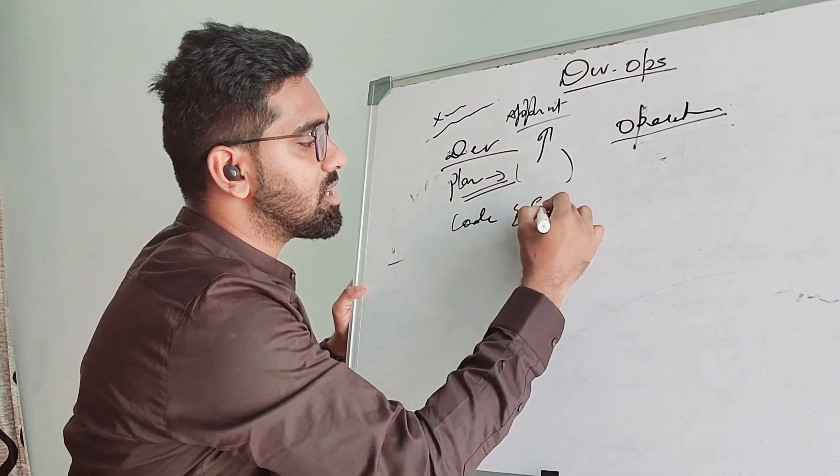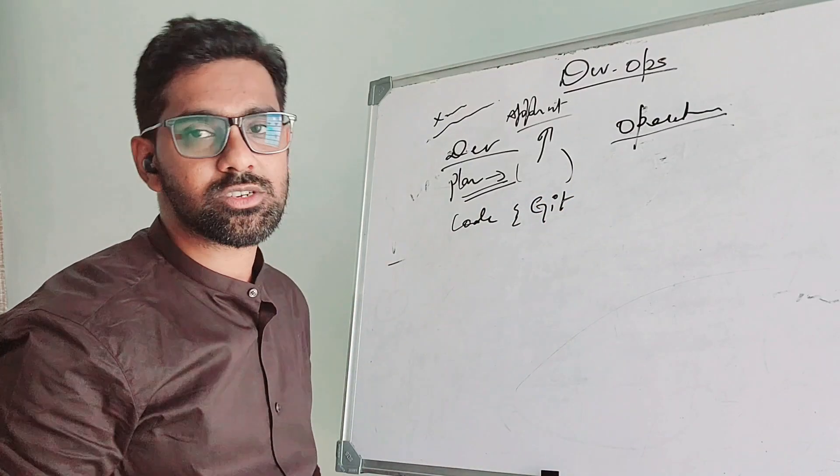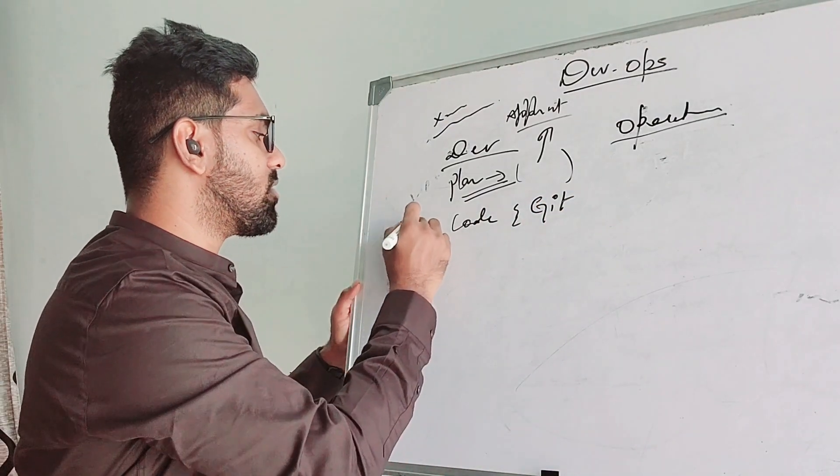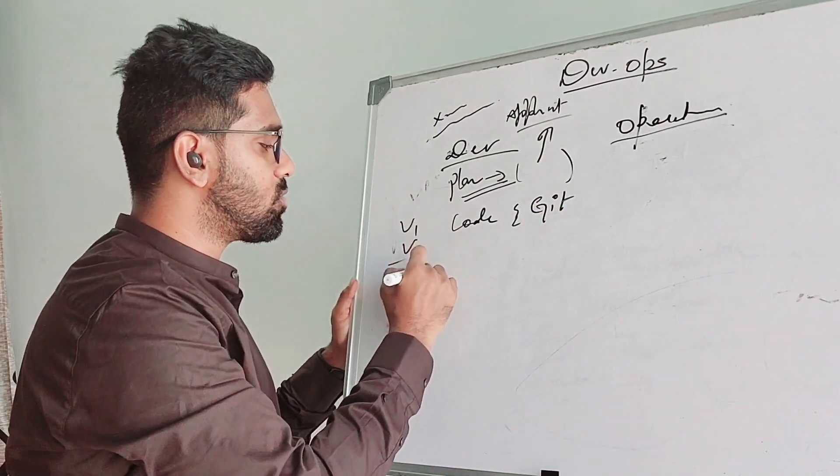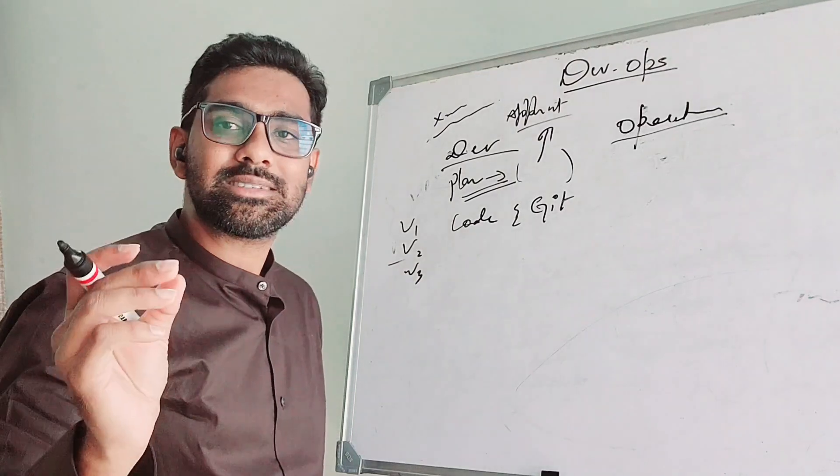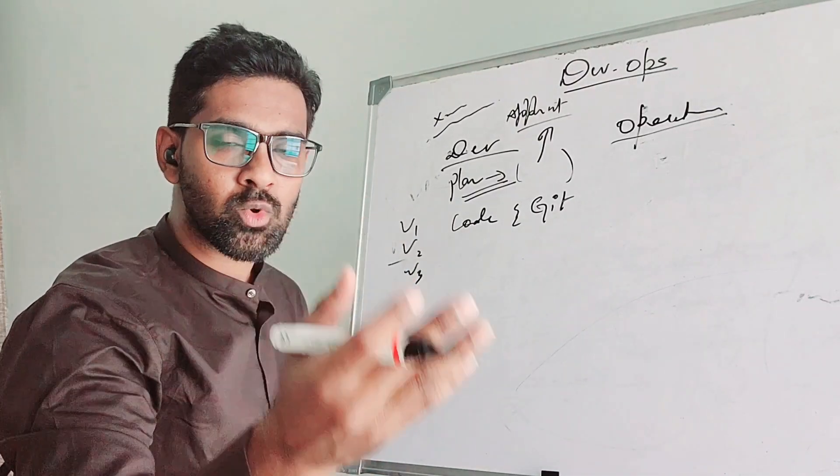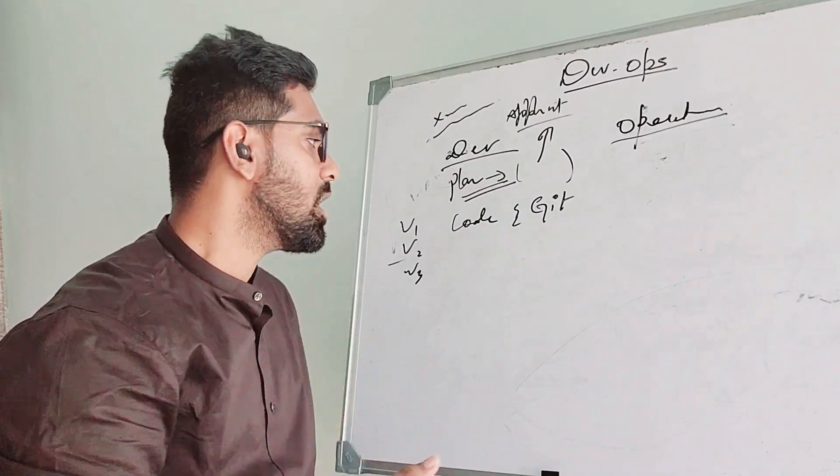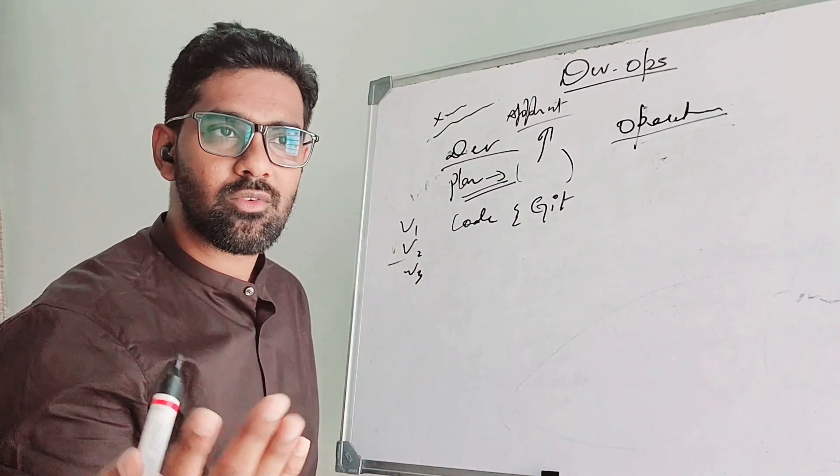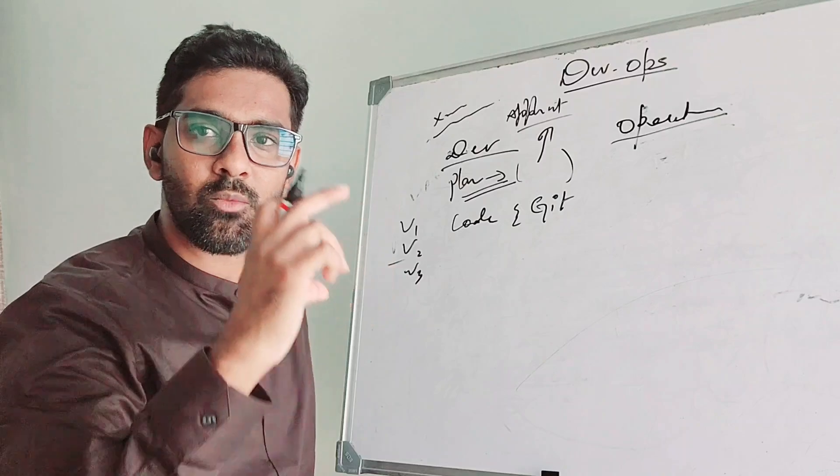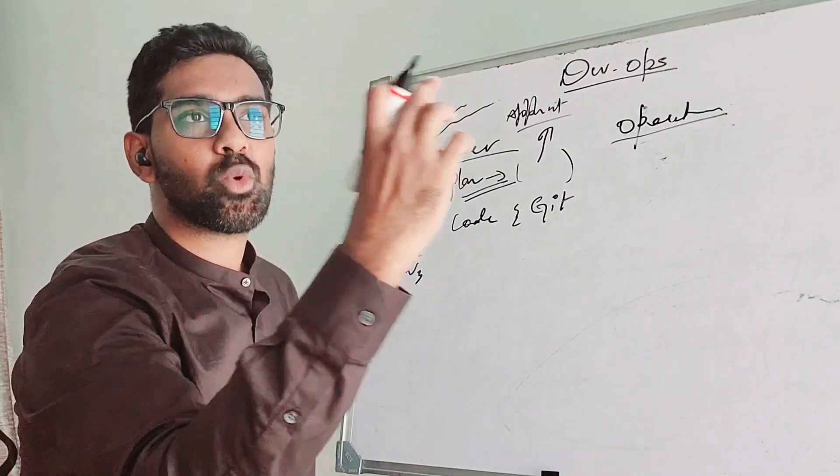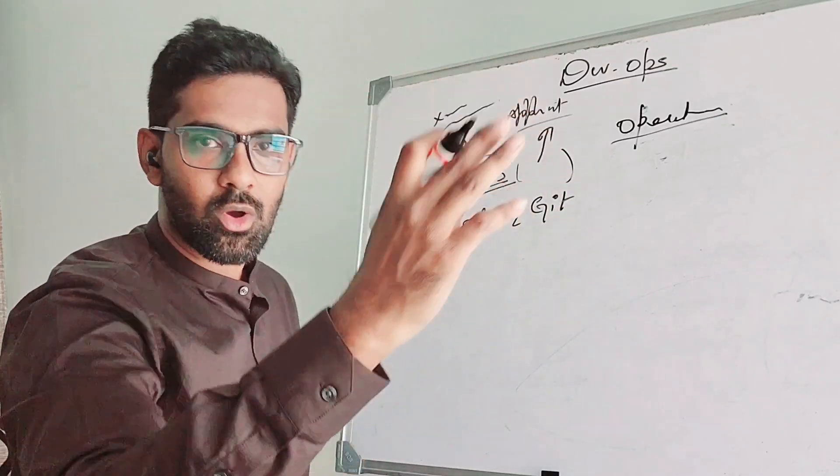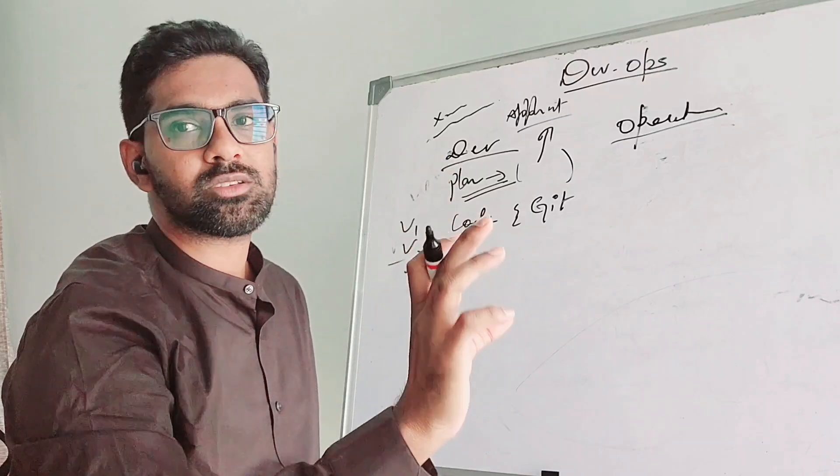Once they plan the code based on application objectives or customer requirements, they start writing code. This code is normally stored in the Git. What is Git? It's a version control system. For example, you have version 1 of code, version 2, version 3. What is version 1, version 2, version 3? Simply, when the customer asks you to do something, you do that. They come back and say, hey, you know what, I want you to add another feature to it.